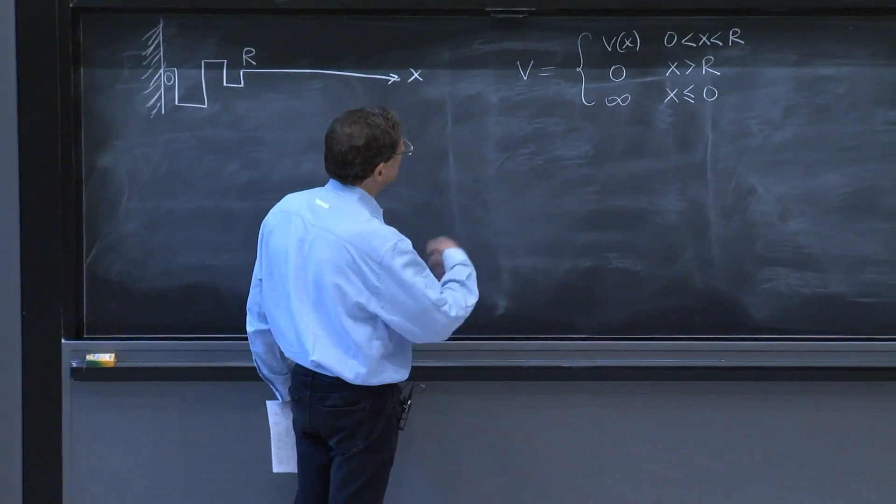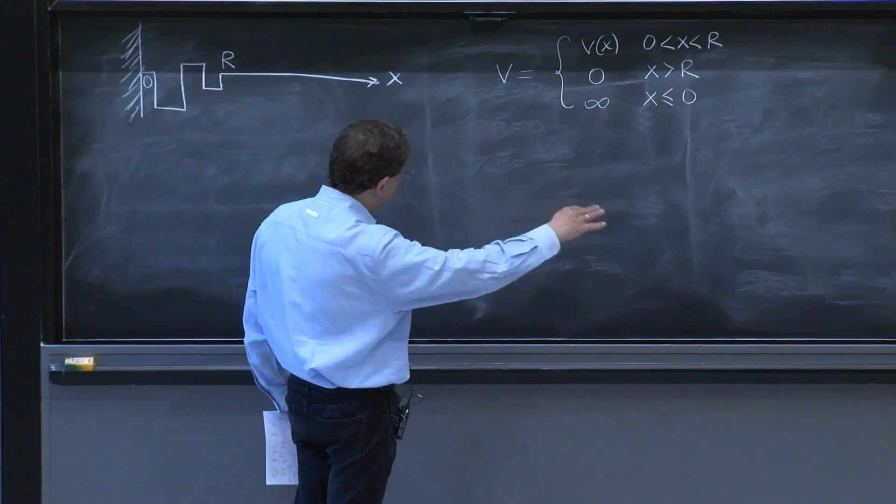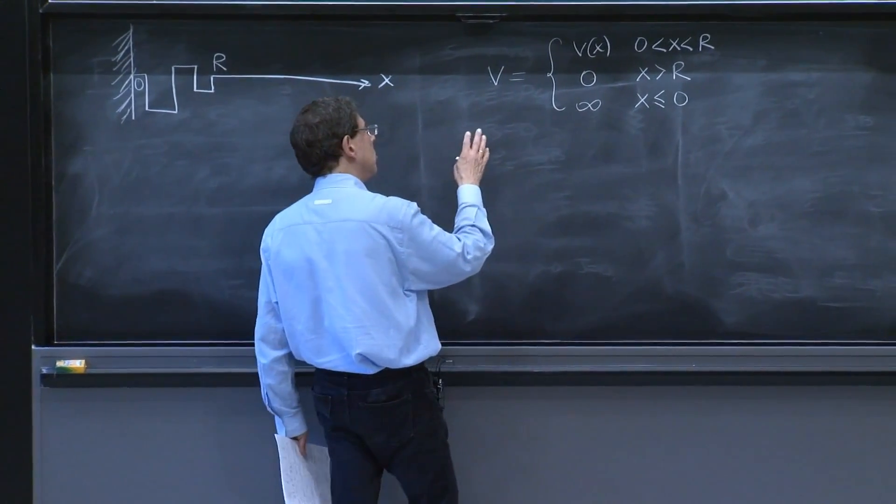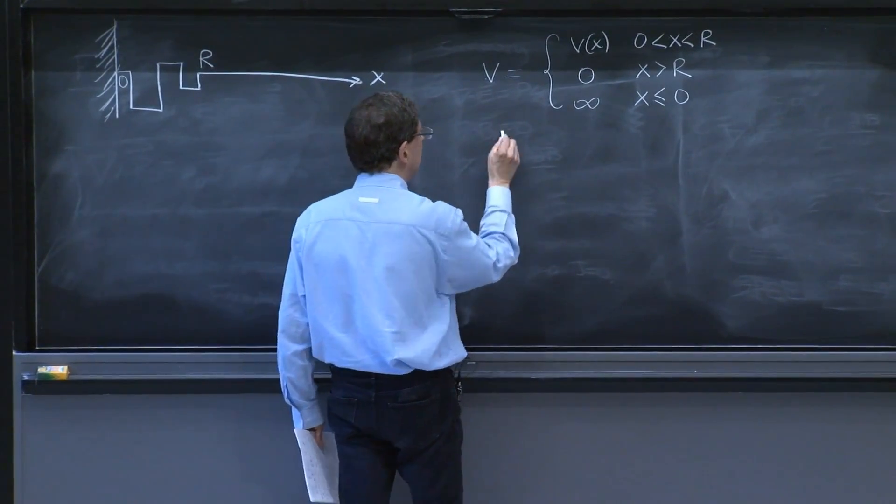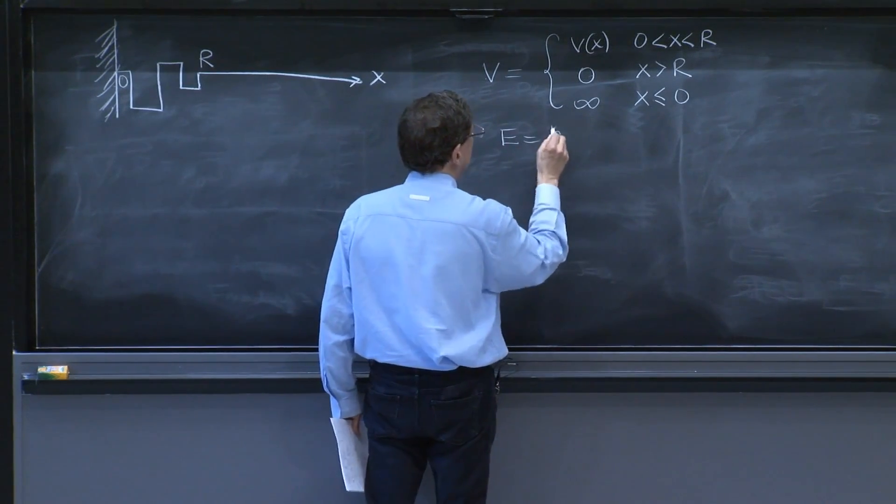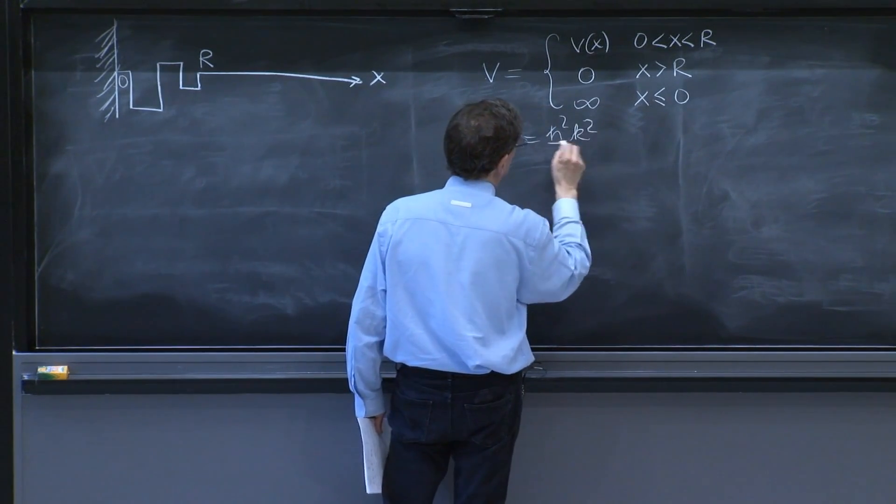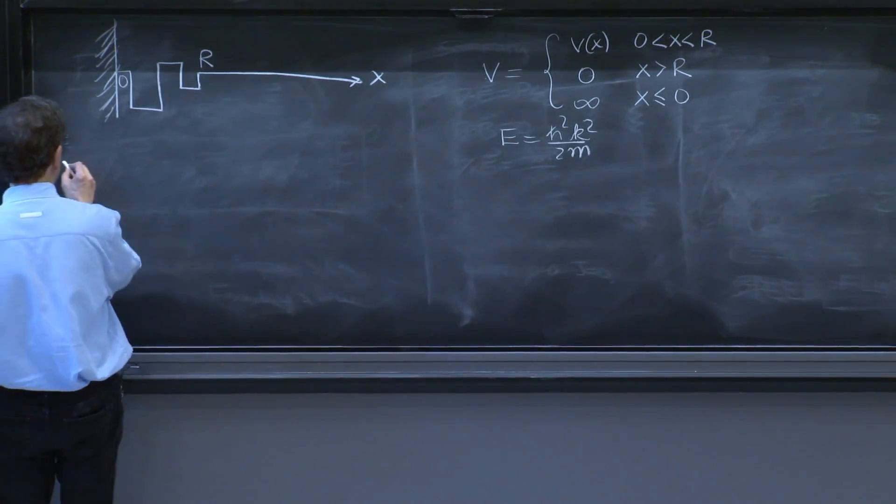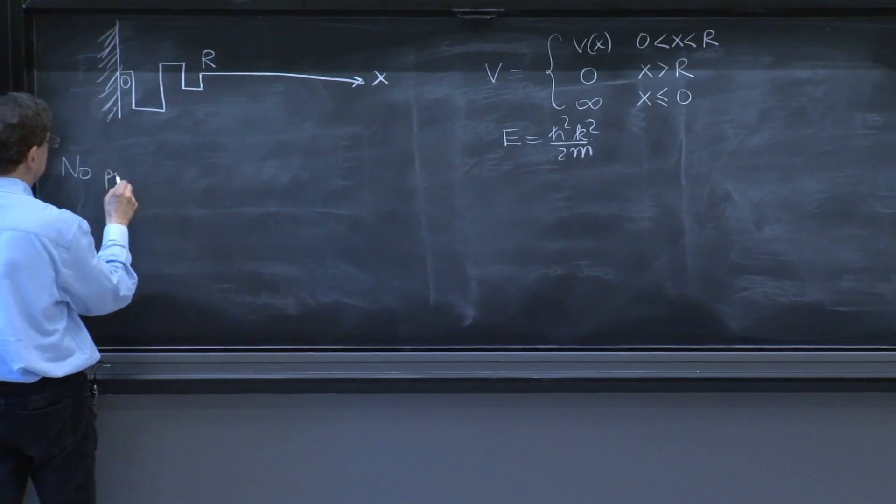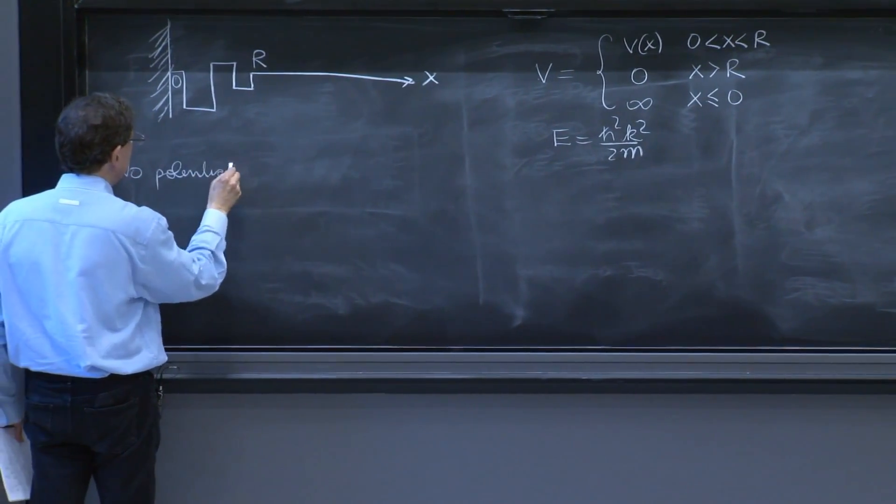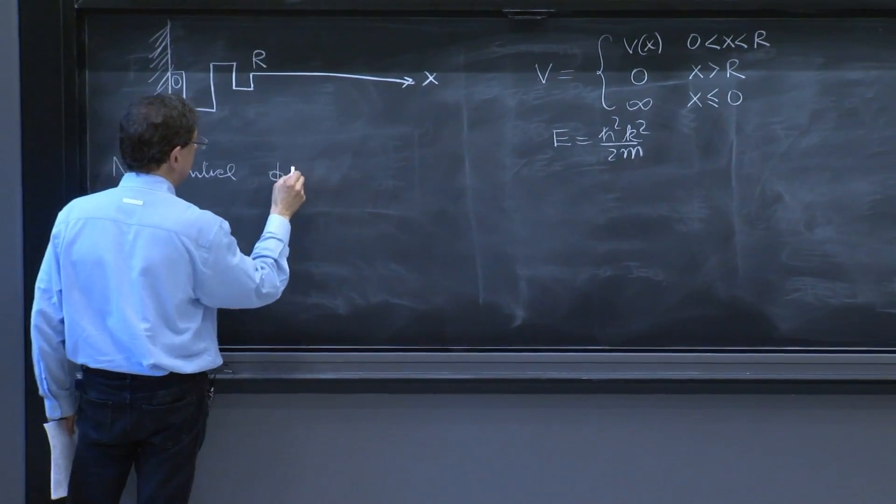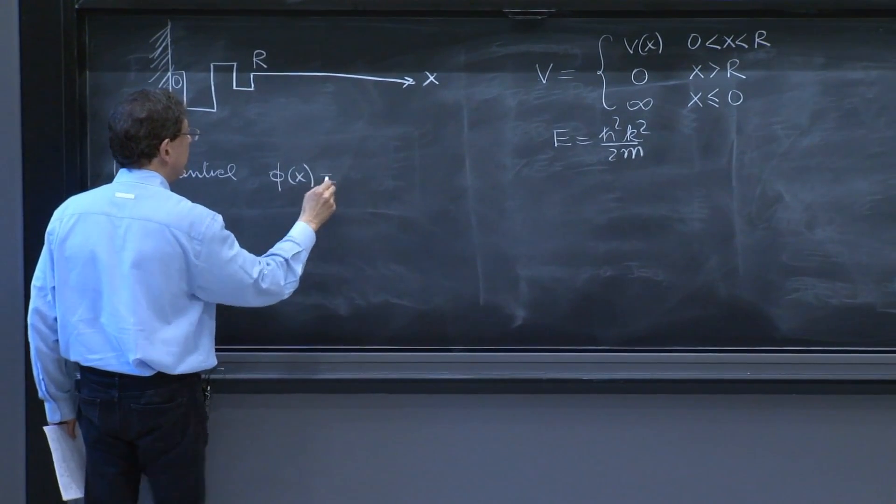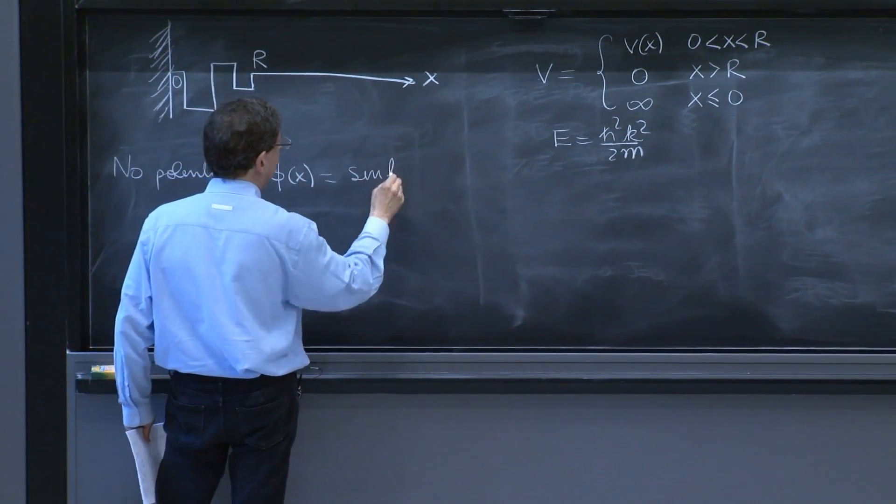As usual, we considered scattering solutions, solutions that are unnormalizable with energies h squared k squared over 2m for a particle with mass m. And if we had no potential, we wrote the solution phi of x, the wave function, which was sine of kx.